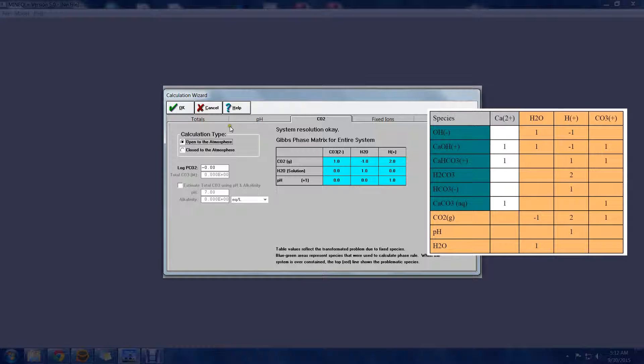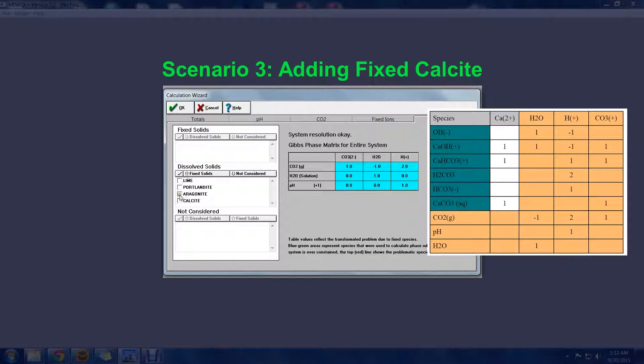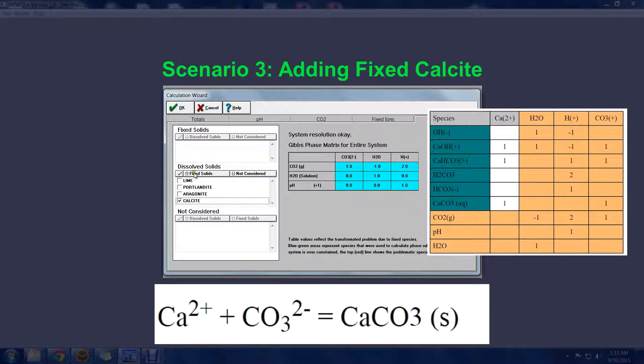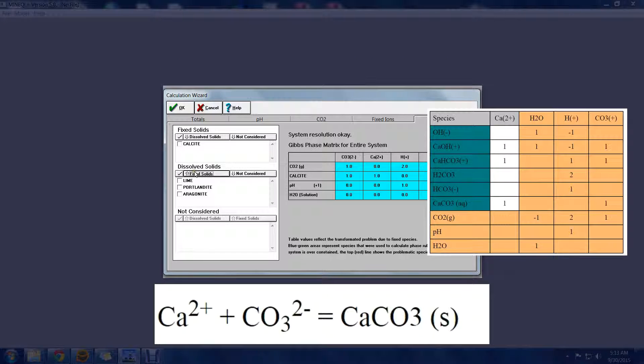Adding more requirements to our system, we would like to have the system in equilibrium with an infinite source of calcite. This means that the calcite could, left to its own, control either calcium or carbonate. Since the carbonate is already controlled by CO2 gas, the calcium will be controlled.